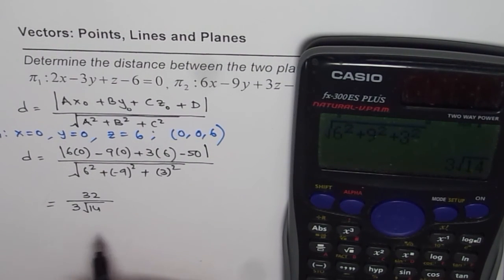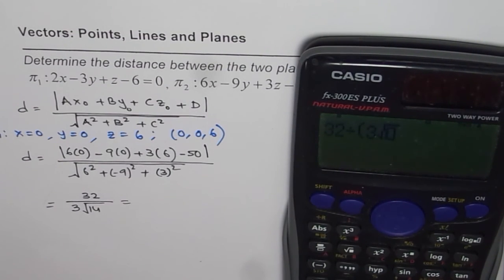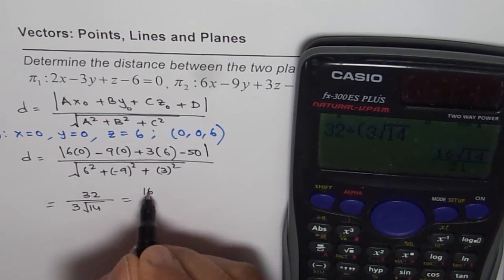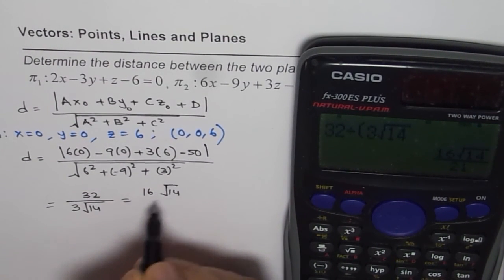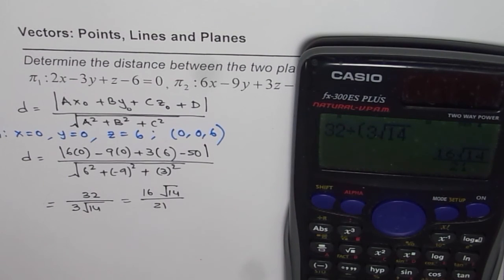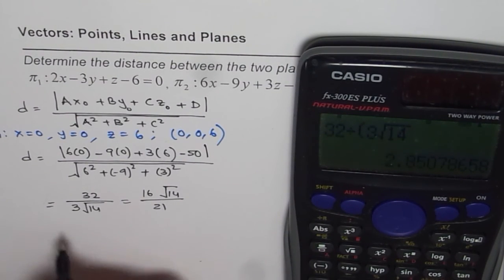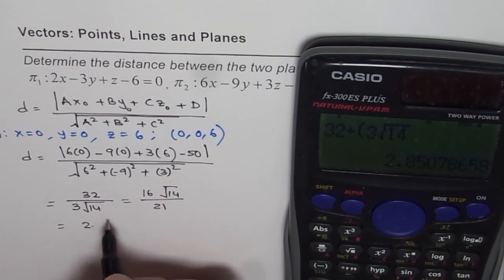Now we can divide 32 divided by 3√14. Let's write down this value: 16√14 / 21, which is in decimals around 2.85.